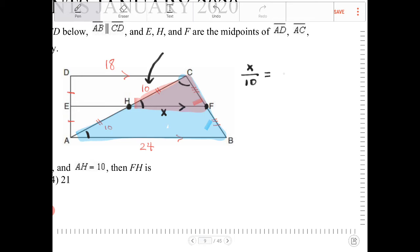So which side corresponds with X? Well, that's a side length of 24. Which side length corresponds with side length 10? Well, that's AC, right? And that has a length of 20.